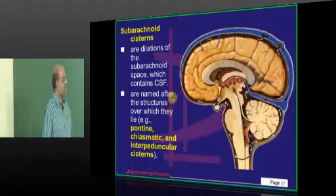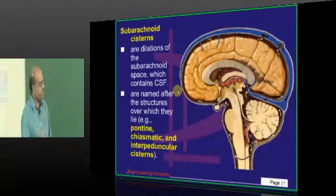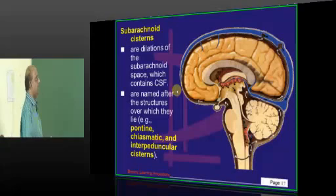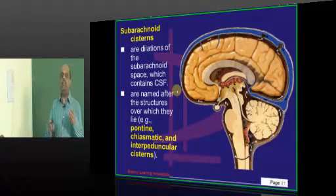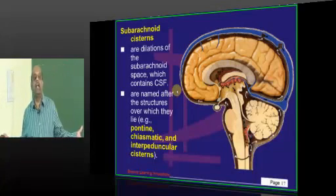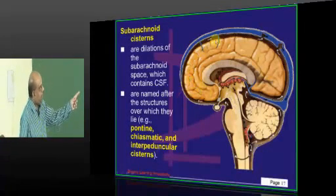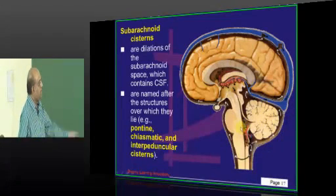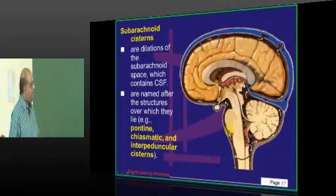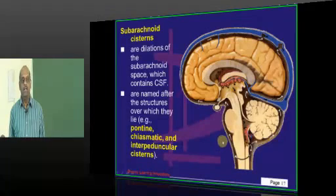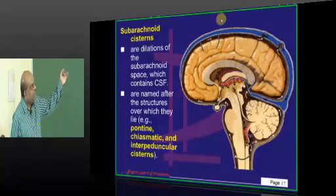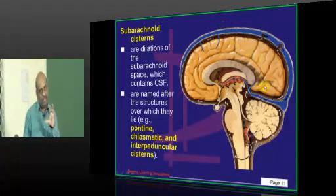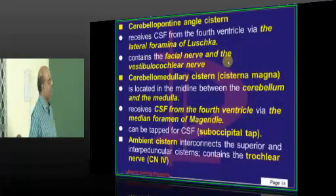What are the subarachnoid cisterns? The subarachnoid space containing CSF has dilatations in a few locations which are called cisterns. Depending upon where each is located, it is named according to the underlying structure. So you have a pontine cistern, chiasmatic cistern, interpeduncular cistern — it all depends upon which part of the subarachnoid space is being referred to.